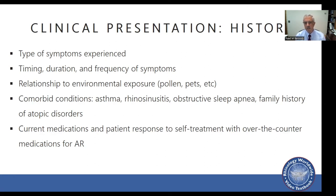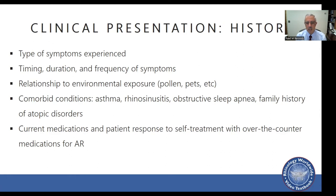As part of the history, I always ask about comorbid conditions. Asthma is very common. Rhinosinusitis is very common. Sleep-disordered breathing such as obstructive sleep apnea is commonly seen. It's important to ask about family history of atopic disorders, as there is more likelihood of patients being allergic if parents or siblings are also allergic. I also ask about what medications — typically over-the-counter or prescription — have been used and how the patient has responded.